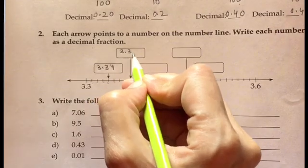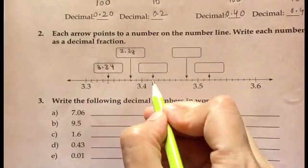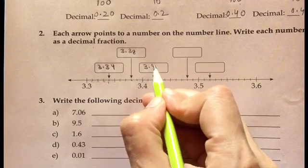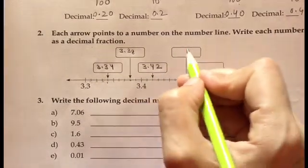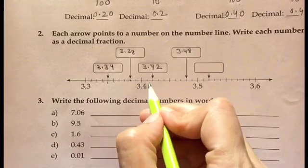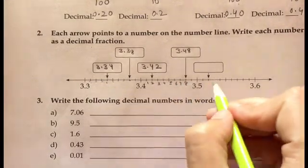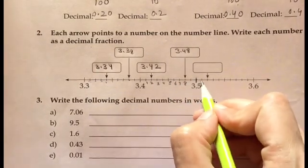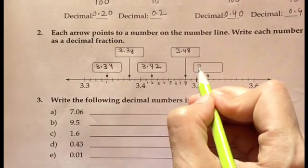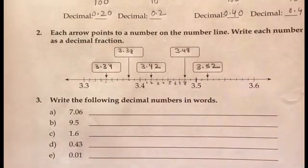So this is 3.4, 3.41, 3.42, 3.42. This will be 3.48. See, 1, 2, 3, 4, 5, 6, 7 and 8. This is 3.5, 3.51, 3.52, 3.52. So this way you can write.